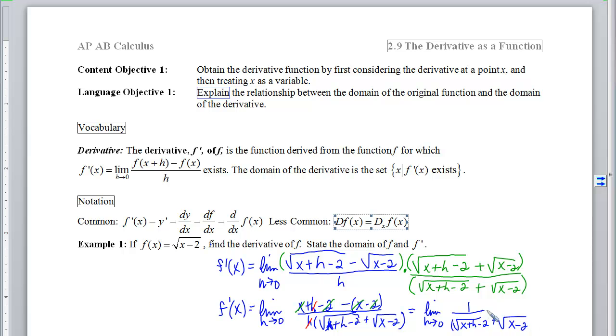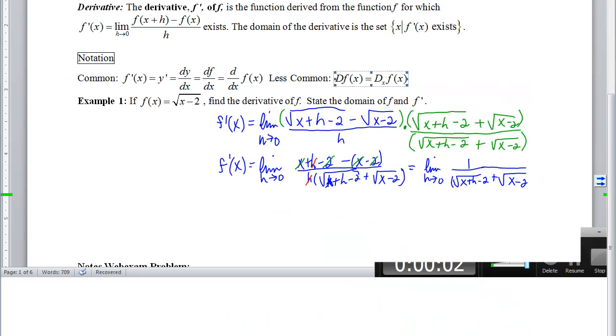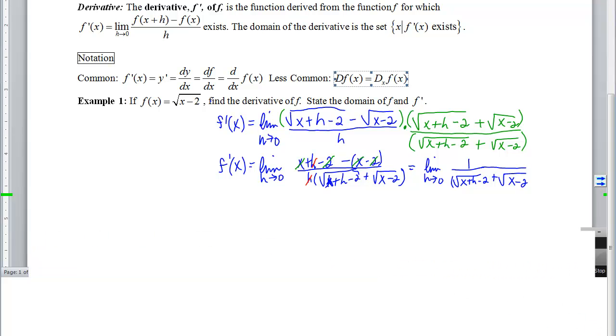We'll end up getting f' is that limit as h approaches 0 of 1 over that conjugate, √(x + h - 2) + √(x - 2). Now, if I compute the limit now that 0 is no longer an issue, we'll end up with f'(x) = 1 over 2√(x - 2).